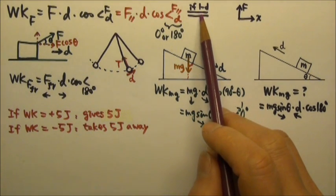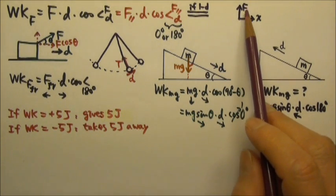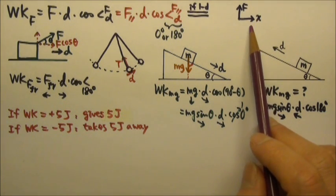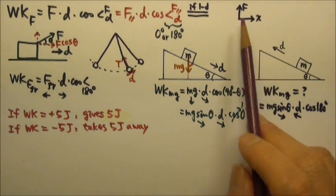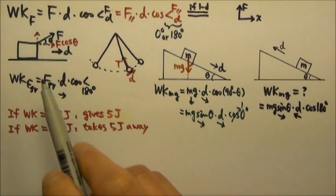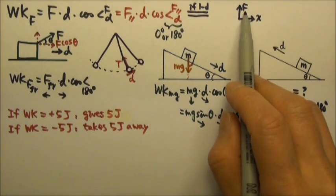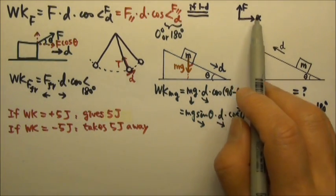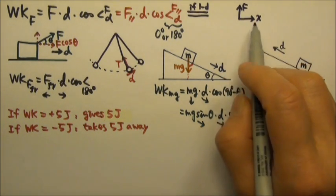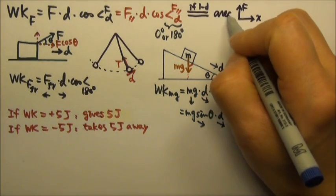If we have a one-dimensional situation and we're given a force versus position graph, the area of the graph gives us the work. Because work is force times displacement, multiplying force times Δx corresponds to the area under the graph.